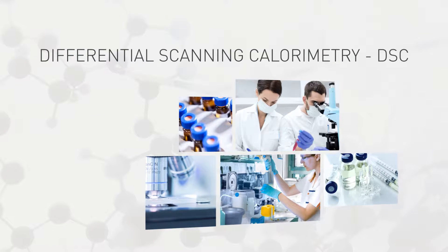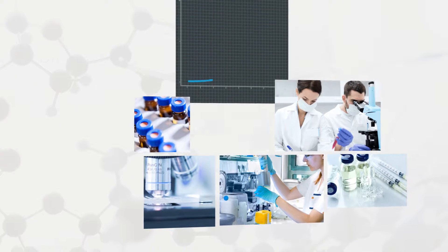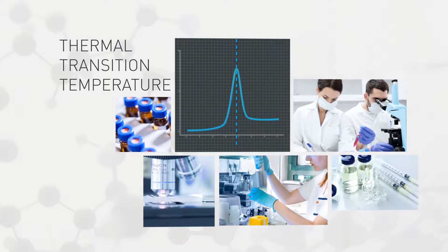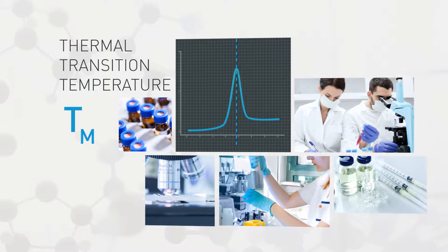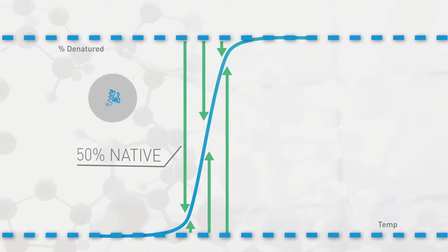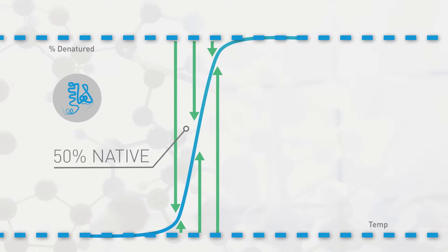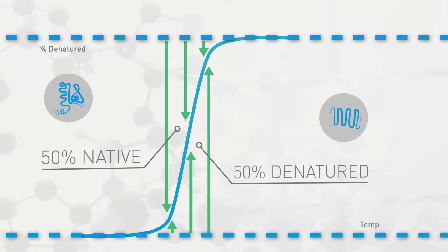DSC measures the protein's thermal transition temperature or Tm. For reversibly denatured proteins, the Tm is the temperature at which 50% of the protein is native and 50% is denatured.